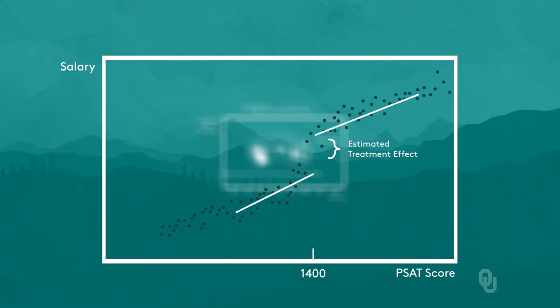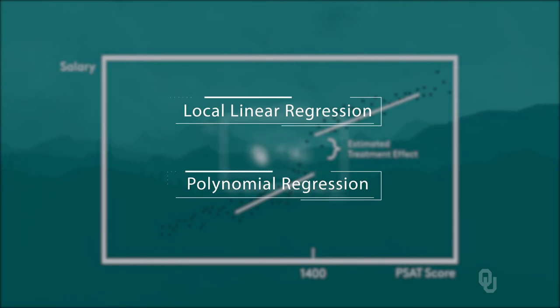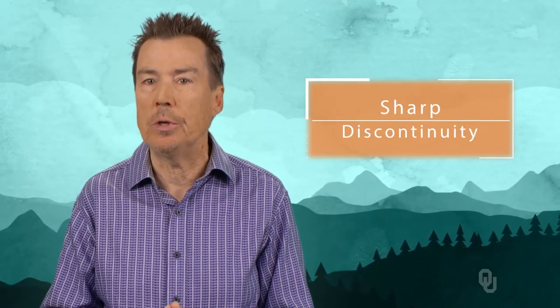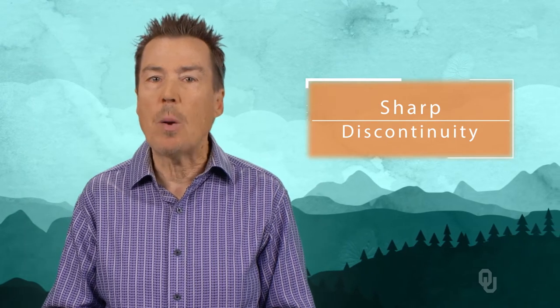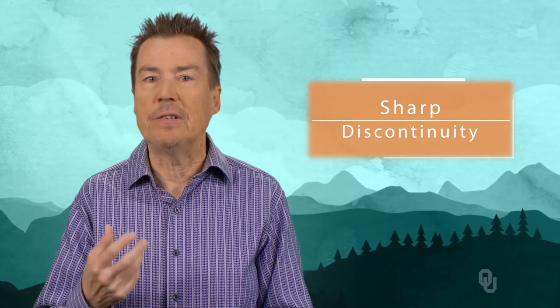Graphs like these are at the heart of RD analysis. We can estimate the size and significance of the jump using local linear regression or a polynomial regression. But if the graph doesn't show a jump, there's no real effect to be found by further statistical analysis. What is required is not that the probability of treatment goes from zero to one at the cutoff — that's the cleanest case, called a sharp discontinuity. All that's required is that the probability of treatment jumps discontinuously at the cutoff.